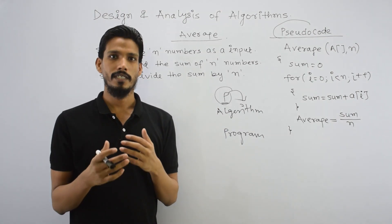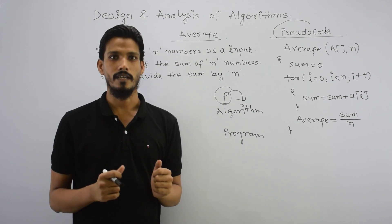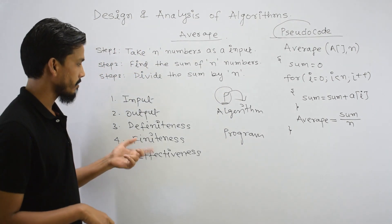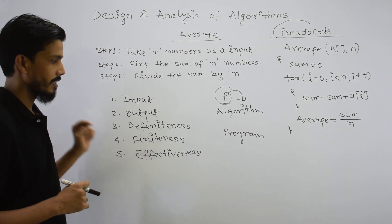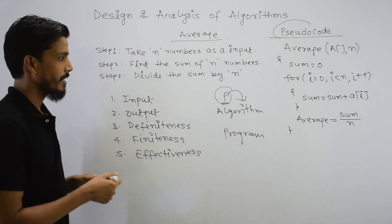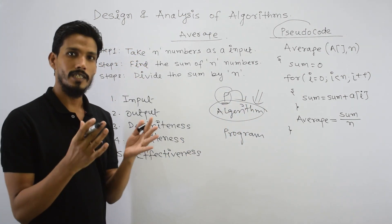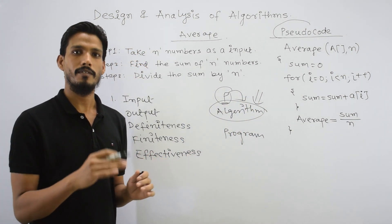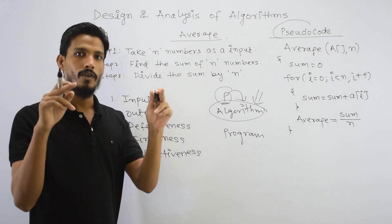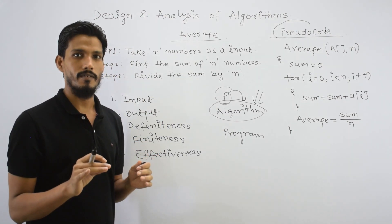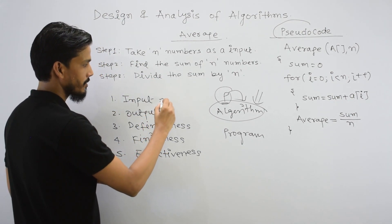Now we will discuss the next point — the algorithm characteristics. There are a total of 5 properties: first, input; then output; definiteness; finiteness; and effectiveness. If there is an algorithm, we will provide some input. But there are some algorithms that have no input requirement — similar to a function where giving a parameter is not mandatory. The input can be zero or more.